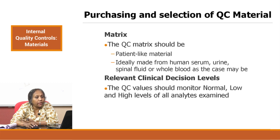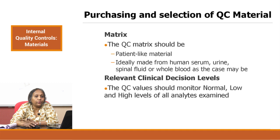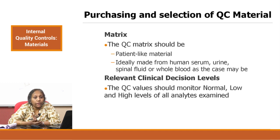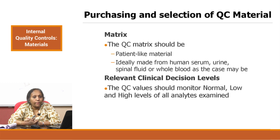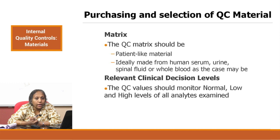If the sample is serum, the matrix should be like human serum. If it is a urine control, it should be like urine. If it is a spinal fluid control, it should be like spinal fluid. And if it is whole blood, the matrix should be like whole blood. The second consideration is relevant clinical decision levels — QC values should be able to monitor normal, low, and high levels of analytes that you are examining. Many controls like hematology controls and immunoassay controls have three levels: low, normal, and high. Whatever the clinical decision levels are, those levels should be monitored by the controls.